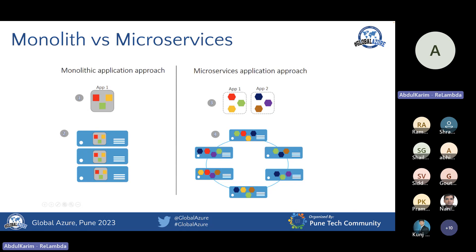Microservices is basically breaking down that code into individual components. For example, if you're running a cab rental service like Uber or Ola, there are multiple components: a booking API responsible for creating a booking, a pricing API for fetching pricing based on time, location, demand, and supply, and a location API that tracks drivers. In a monolithic approach, all of these functionalities would be in a single application, and if you want to scale up, you scale the entire monolithic piece of code.